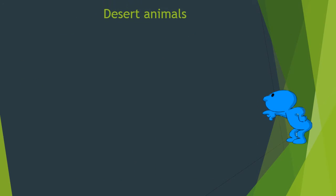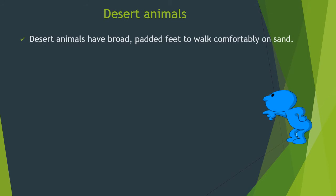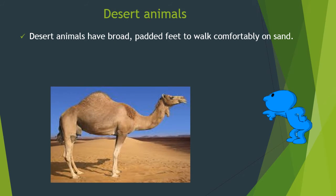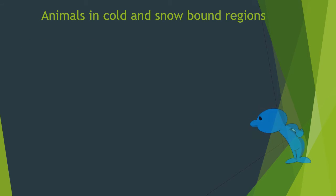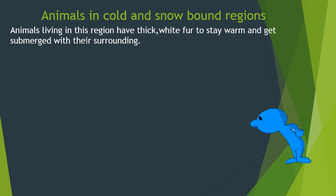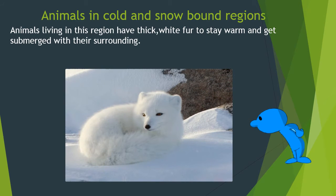Desert animals have broad padded feet to walk comfortably on sand. They have long thick eyelashes to protect them from sand storms — for example, camel. Animals living in cold and snowbound regions have thick white fur to stay warm and blend in with their surroundings — for example, polar bear.